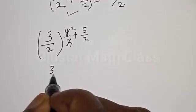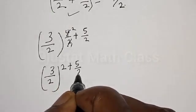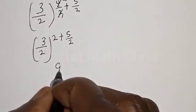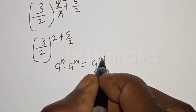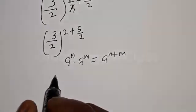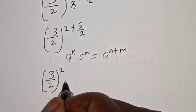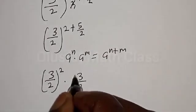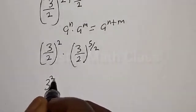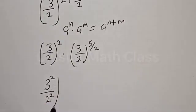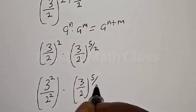We have 3 divided by 2, all raised to the power 2 plus 5 divided by 2. Remember, if we have a raised to the power n multiplied by a raised to the power m, it is the same as a raised to the power n plus m. Therefore, our equation becomes 3 over 2 squared, multiplied by 3 over 2 raised to the power 5 divided by 2.